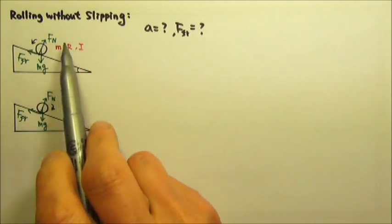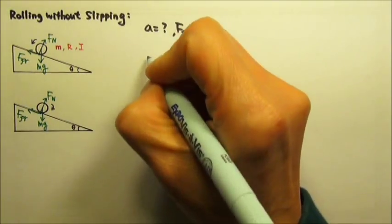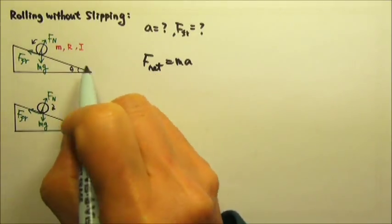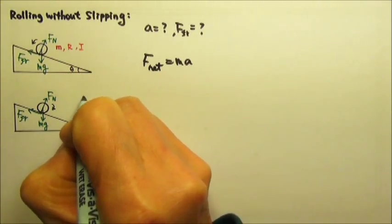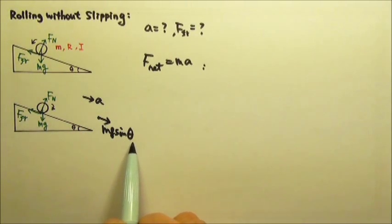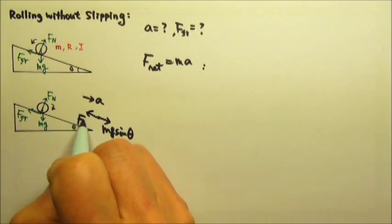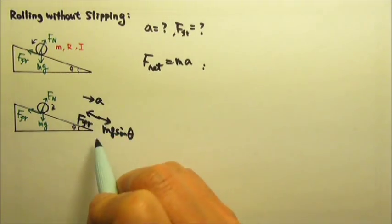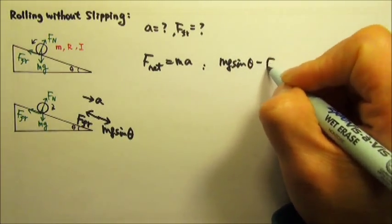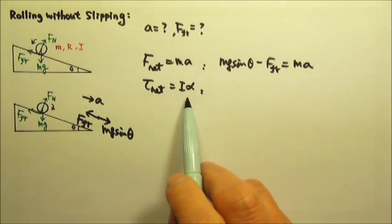It's the same force diagram for rolling up or down the incline. To write the net force equals ma, since the acceleration is going to be down the incline, we use the mg sinθ component. So the net force is the bigger one minus the smaller one: mg sinθ minus friction equals ma.